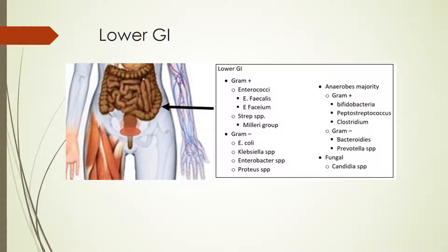The lower GI actually contains the majority of the normal flora, and we find a variety of organisms down here. For gram-positives, we're looking at Enterococci — both E. faecalis and E. faecium — along with some Strep species including the Milleri group. Gram-negatives are also common: E. coli, Klebsiella, Enterobacter, and Proteus species. Anaerobes make up the majority of bacteria found here — gram-positive anaerobes like Bifidobacteria, Peptostreptococcus, and Clostridium, along with gram-negative anaerobes such as Bacteroides and Prevotella. Fungal species can also be isolated. Empirically, we're most concerned about gram-negatives and anaerobes — for instance, in the case of an intestinal perforation, we'd want good coverage for both.